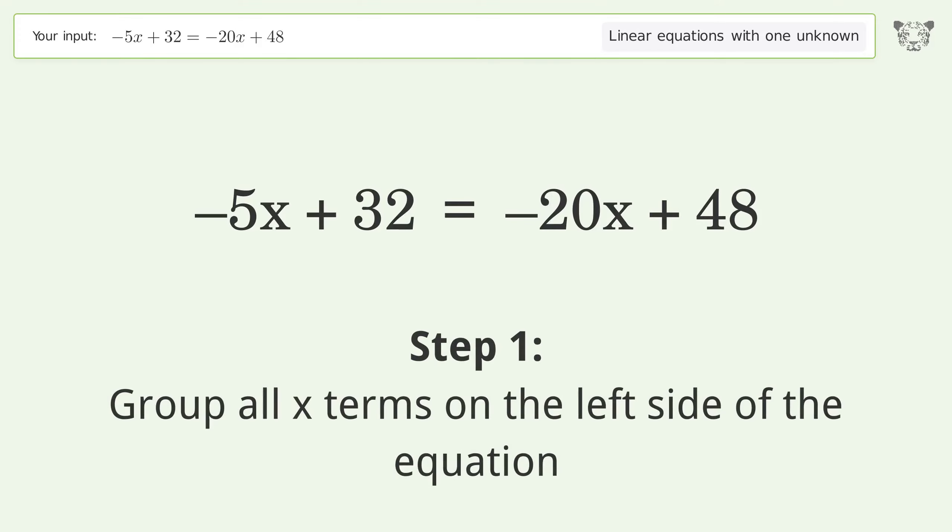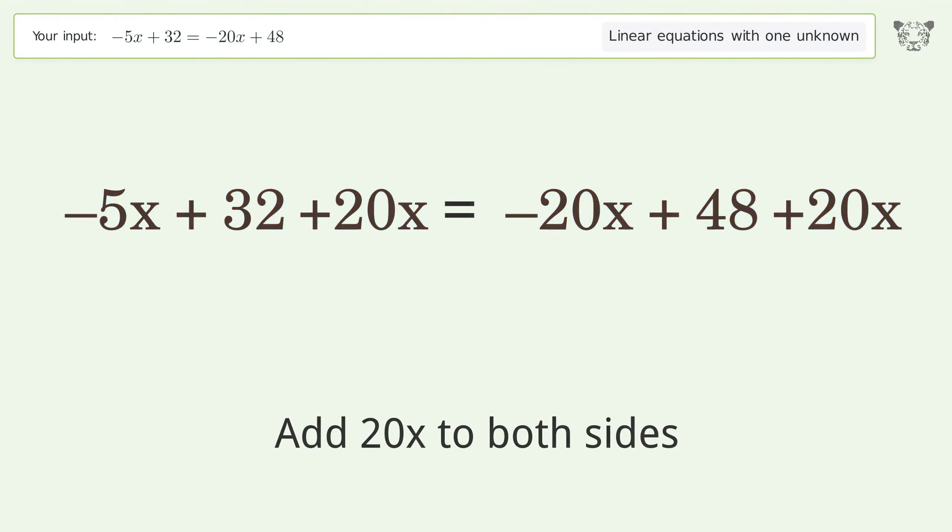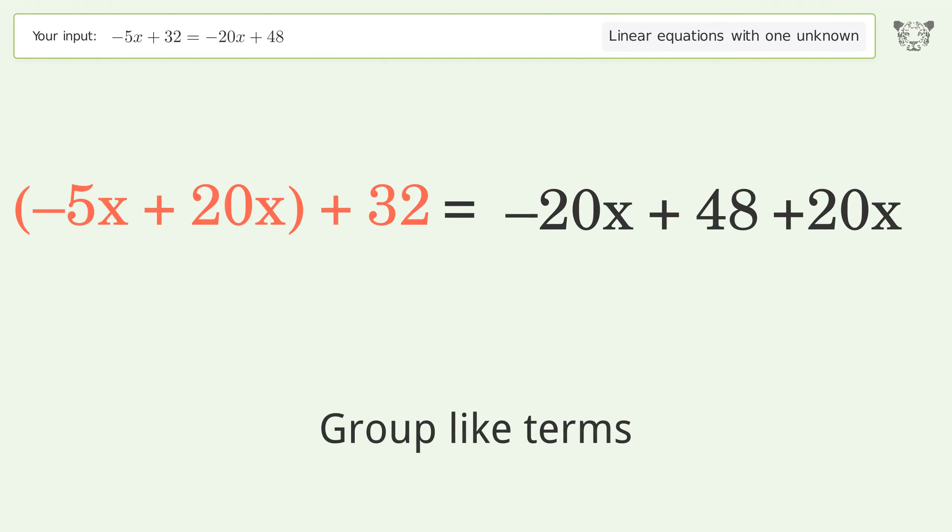Group all x terms on the left side of the equation. Add 20x to both sides. Group like terms and simplify the arithmetic.